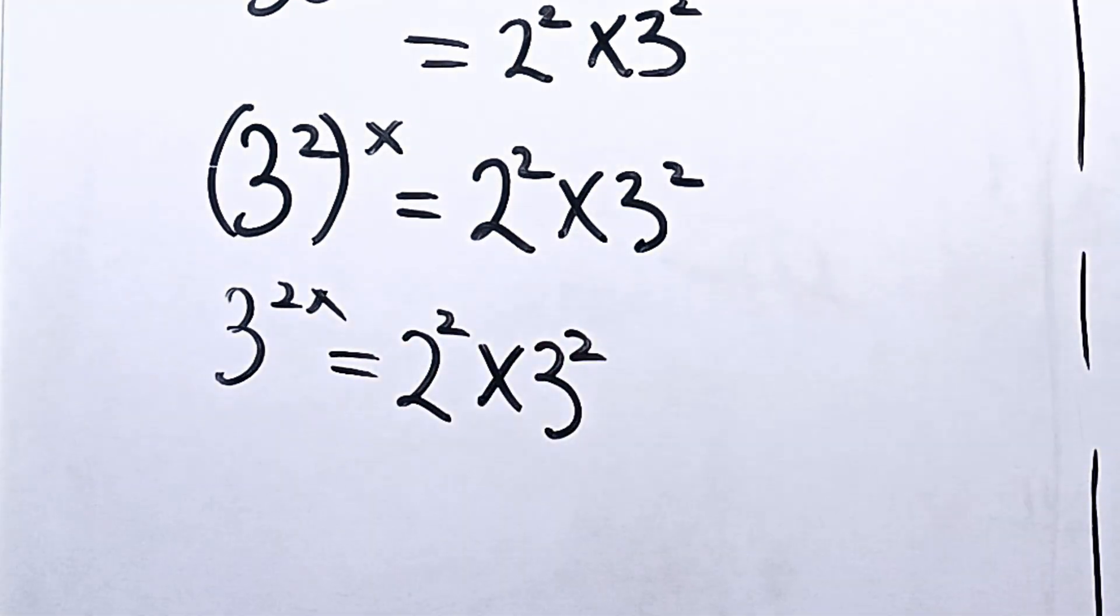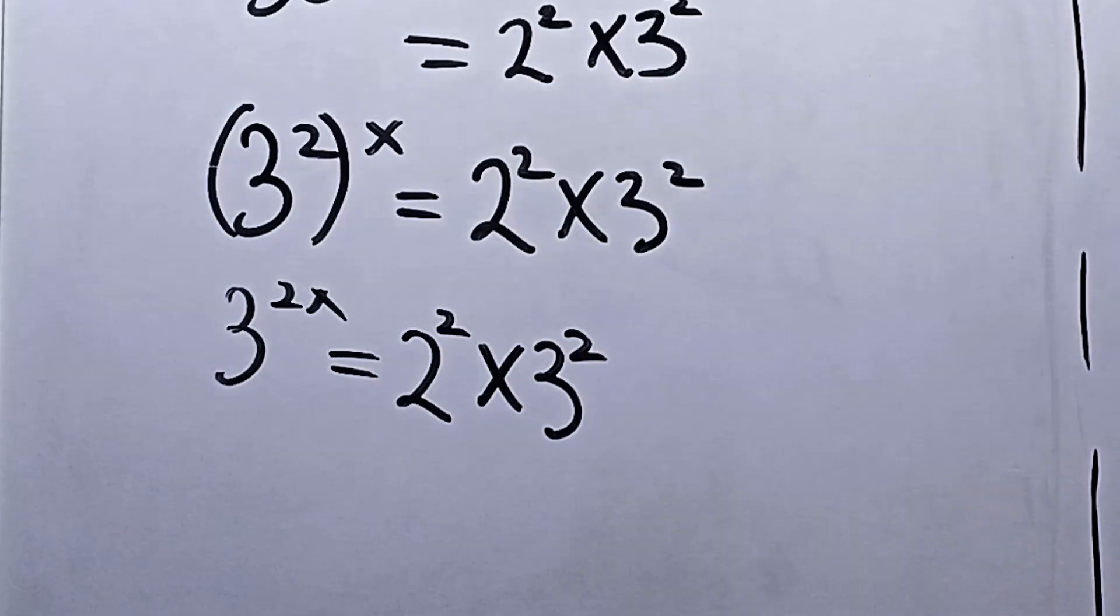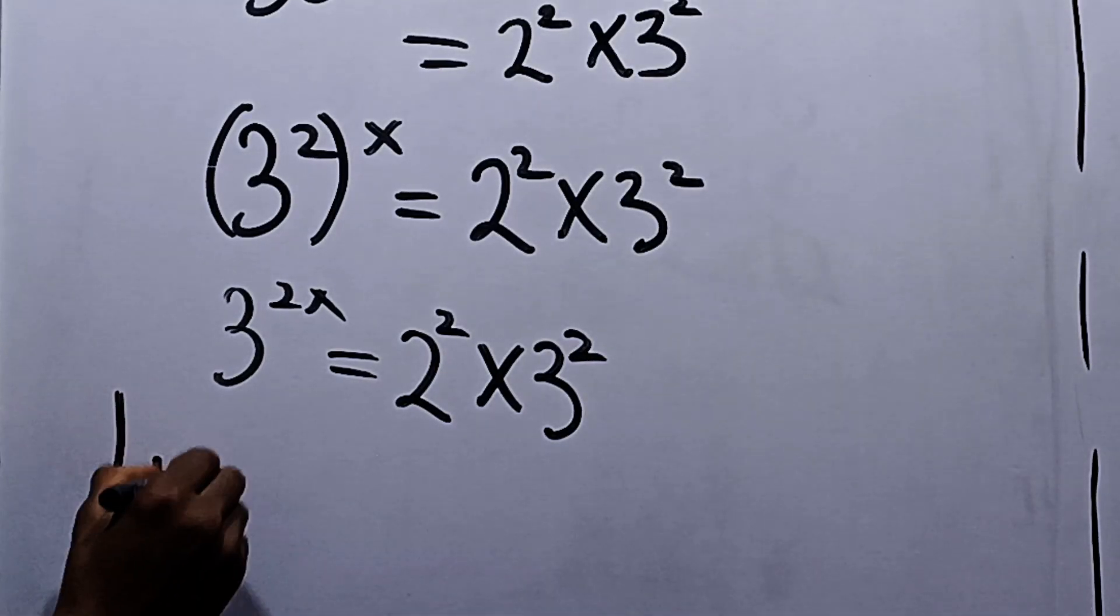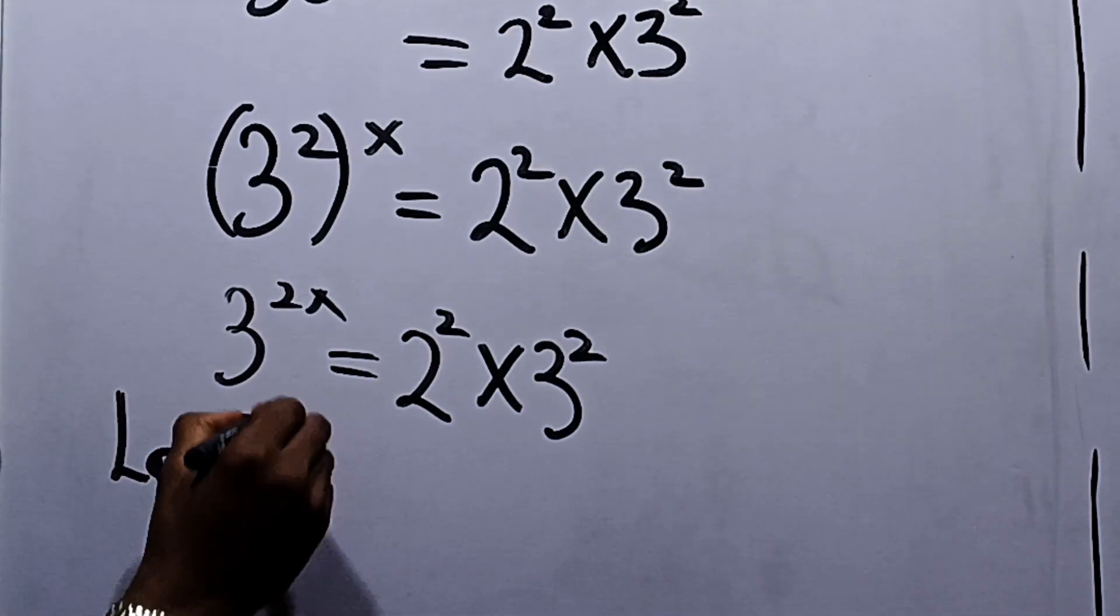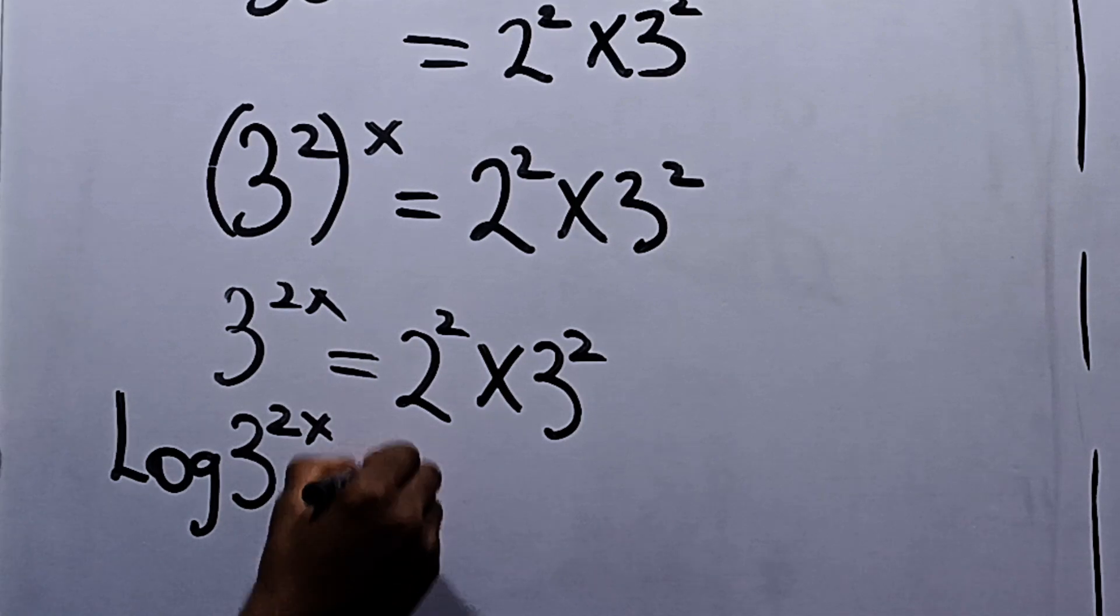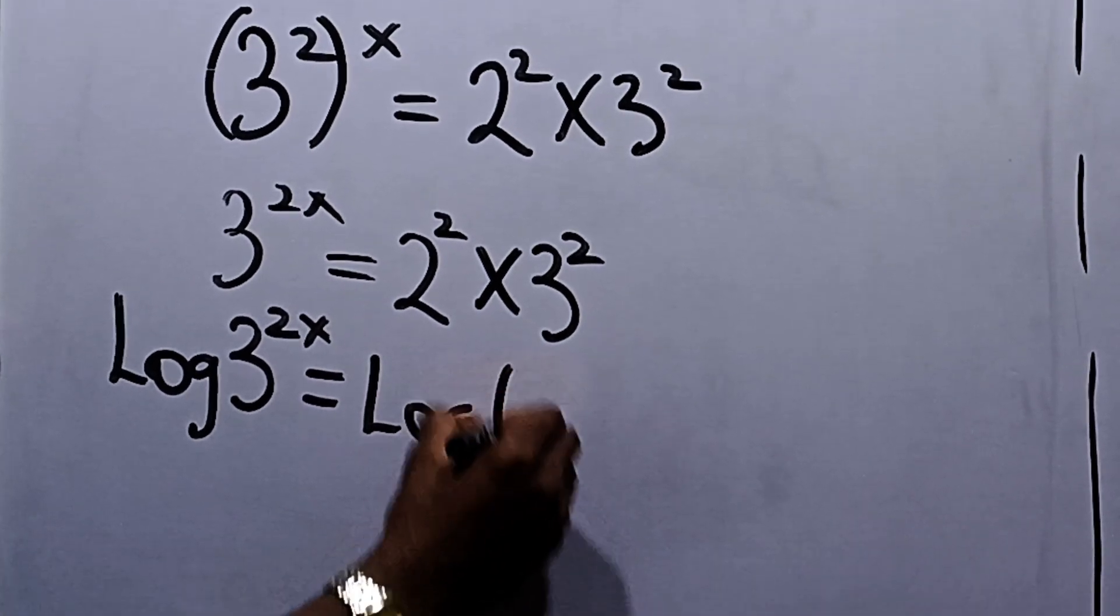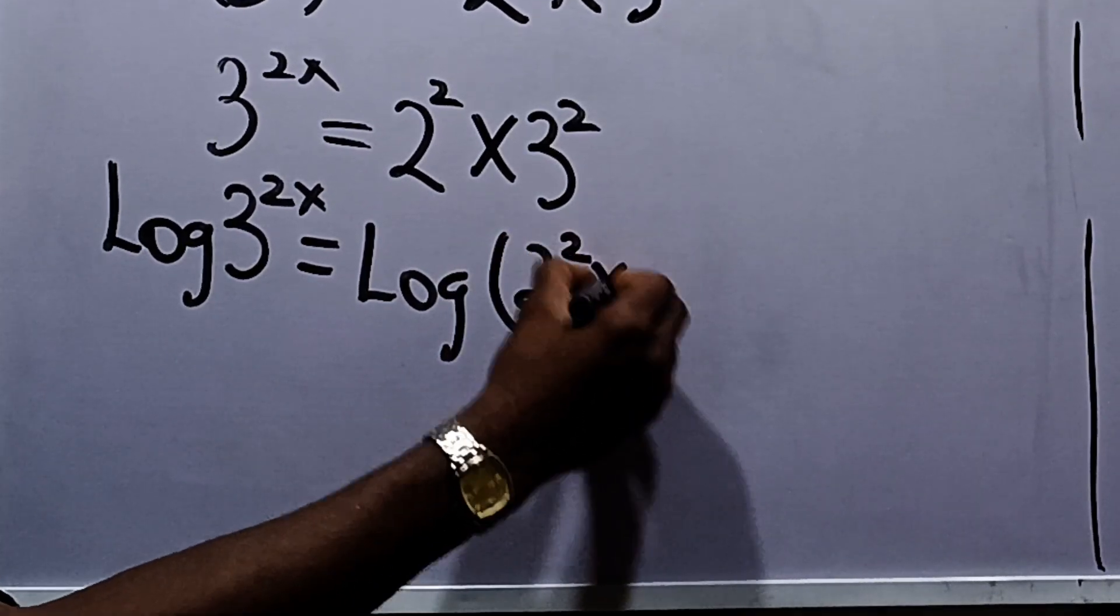Now at this point, let's take the logarithm of both sides. So we have the logarithm of 3 raised to the power of 2x is equal to the logarithm of 2 squared times 3 squared.